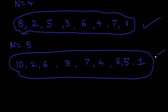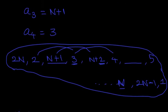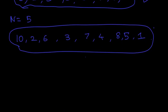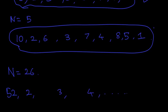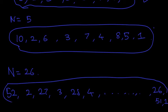We can use the same approach for the original problem when n equals 26. We have 52, then 2, 3, 4, and so on up to 26, then 27, 28, and so on till 51, and we add 1 at the last. So we have found one such sequence.